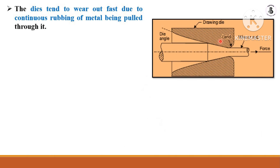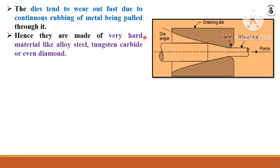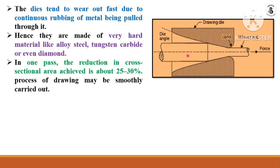The die tends to wear out fast due to the continuous rubbing of the metal being pulled through it. The outer surface of the raw material is in direct contact with the inner surface of the die, causing wear due to the high tension forces. Therefore, dies are made of very hard materials like alloy steel, hardened steel, tungsten carbide, or even diamond. The accuracy and shape of the wire drawing process depends upon the die opening and die material.